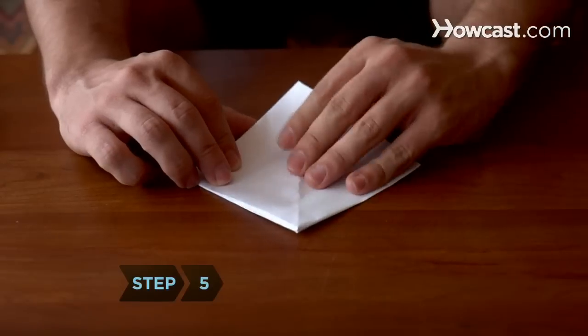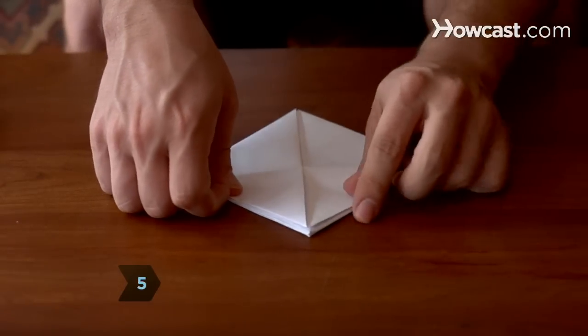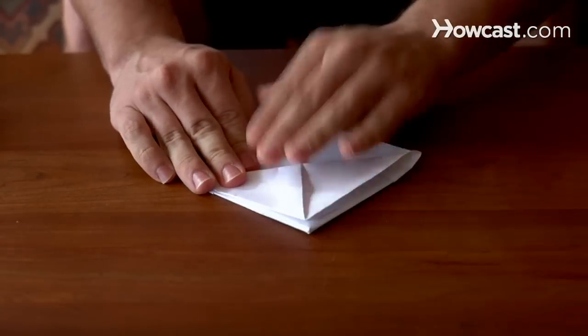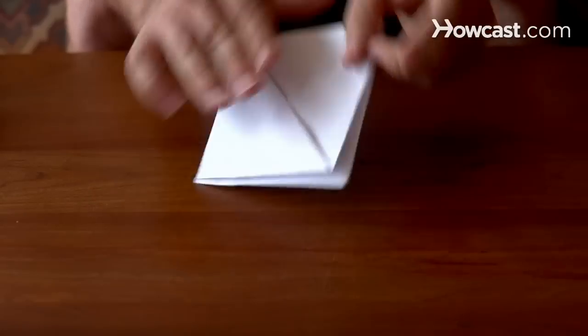Step 5. Fold the lower triangle flap upward and onto the upper triangle. Then turn the boat over and repeat with the other side.